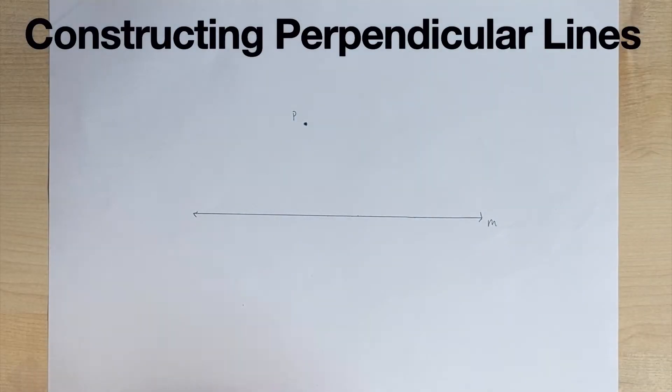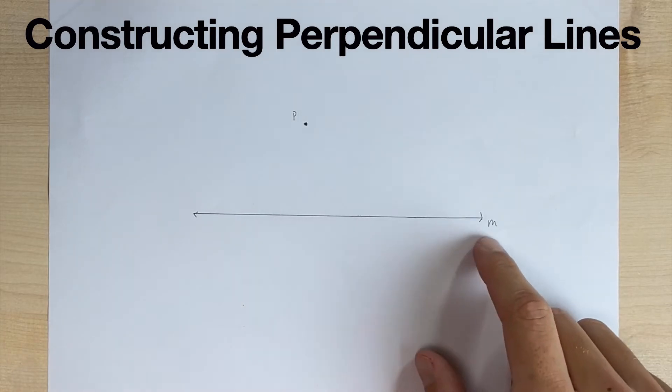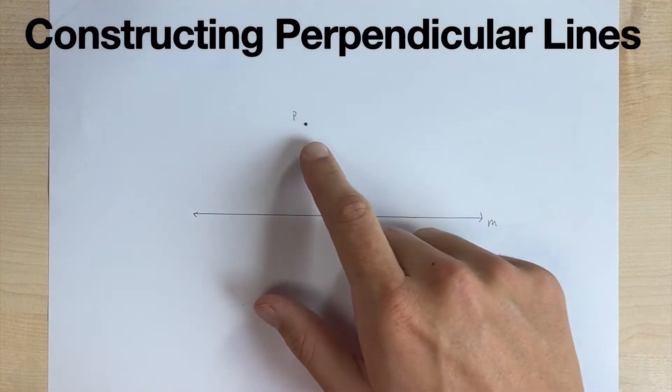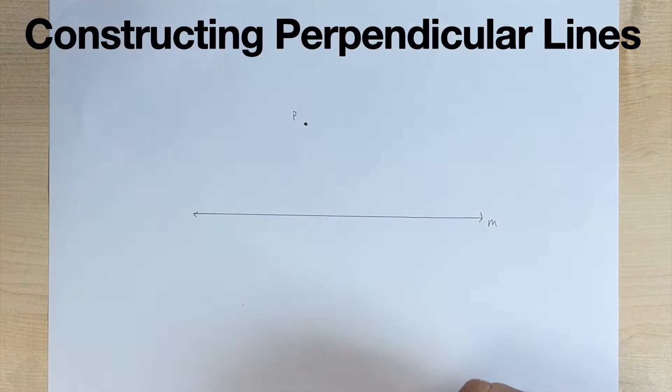Hello, everybody. In this video, we're going to look at how to construct perpendicular lines. So here's our setup. We have line M drawn on our paper, and we have point P drawn above our line.